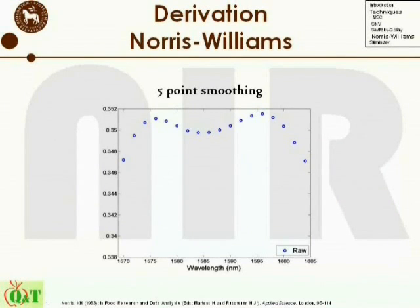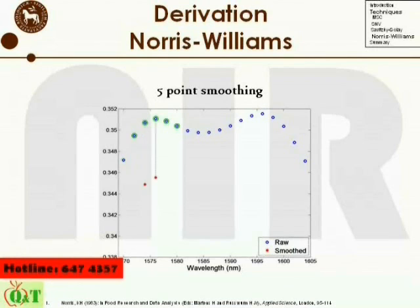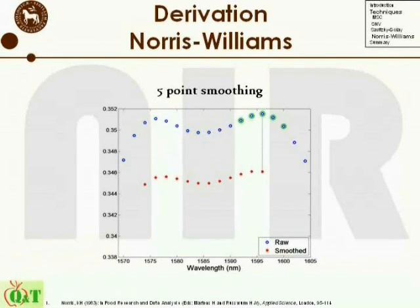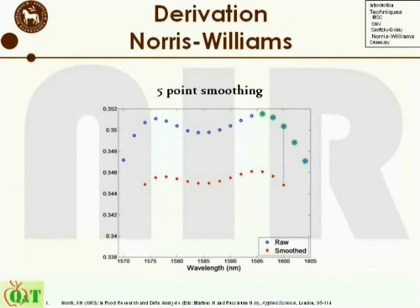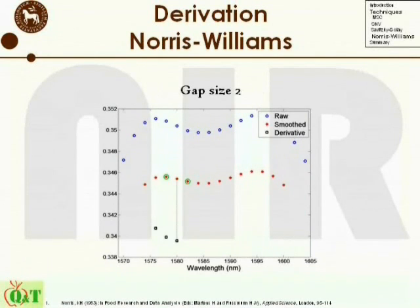As for Savitzky-Golay, there are three parameters which should be set prior to estimating the derivative: the degree of derivative, number of points used for the smoothing, and the gap between points used in estimating the derivative. As opposed to Savitzky-Golay, a first-order smoothing function is always used. After the smoothing of the spectrum, the estimate of the derivative is then calculated based on this smooth spectrum. This is performed very much like a finite difference estimate of the derivative, but with the possibility of using a gap size which is different from one.